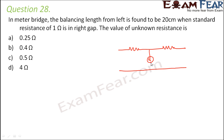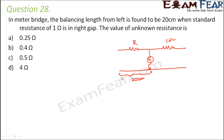You find the null point in this fashion. The balancing length from left is found to be 20 cm, meaning this length is 20 cm. The standard resistance of 1 ohm is in the right gap, so the resistance on the right gap is 1 ohm. We have to find the value of the unknown resistance. If the left half is 20 cm, the right half would be 100 minus 20, because this is a meter scale of 100 cm.